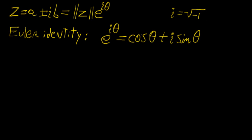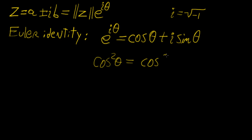This will become very useful in a few videos later on when we use De Moivre's theorem to deduce an expression for cosine squared theta as a function of cosine 2 theta plus some other terms. So that's something we can use this definition of the Euler identity to work out.